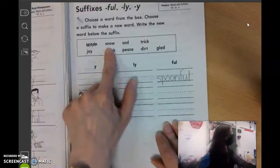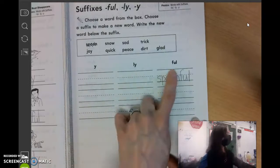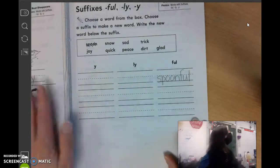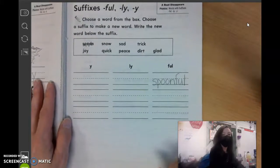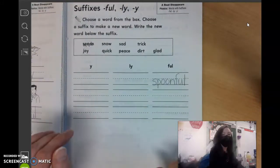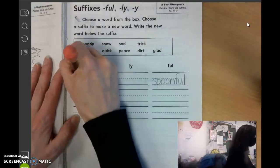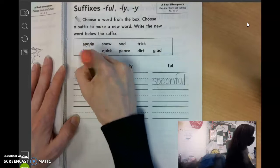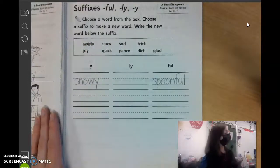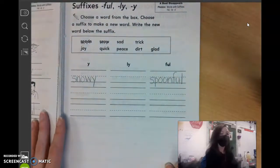Okay, so let's pick another one. What about snow? Under Y, L-Y, or F-U-L? Adam? John? Just Y, snowy. It was a snowy day. S-N-O-W-Y. So you are just writing the word and adding that ending, that suffix. Prefixes at the beginning.